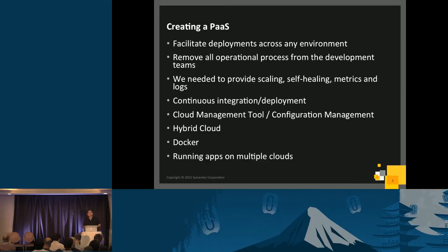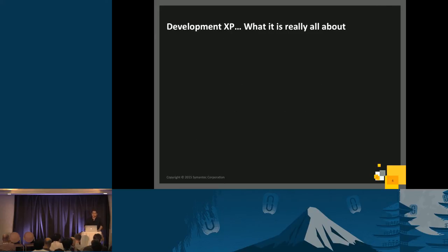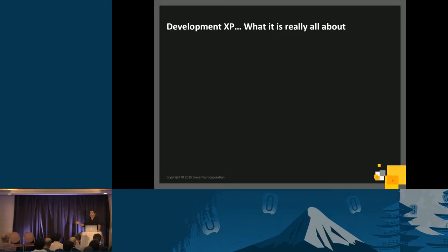Once we finalized requirements, we looked at why we're doing this — the development experience. That's what it's all about. A lot of the time, when you have a development team, especially in DevOps, developers have to learn infrastructure. But they're there to code, not to create packages or do infrastructure work. When you have a PaaS, you just tell the developer to keep coding and push. That's the only thing — they don't care about anything else.